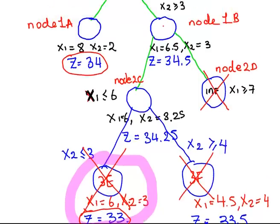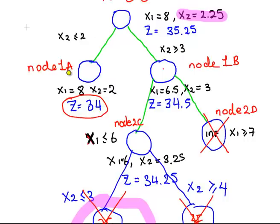So overall, our answer is here, node 1a, x1 equals 8, x2 equals 2, where the objective function there is evaluated at z equals 34.